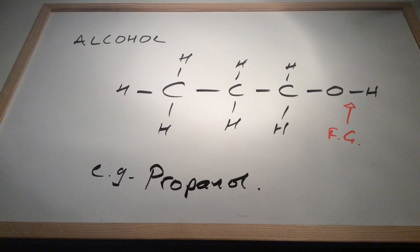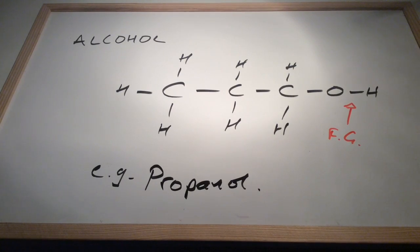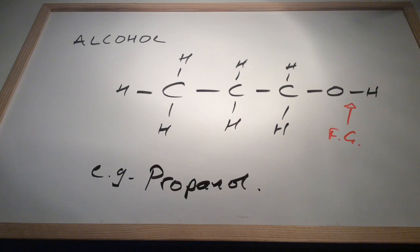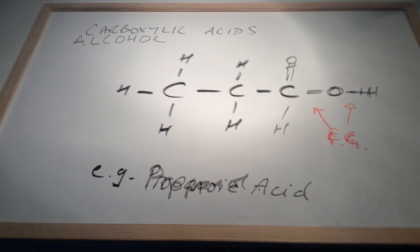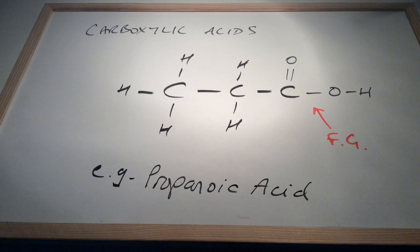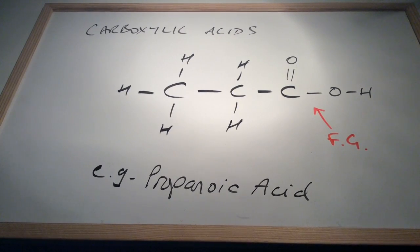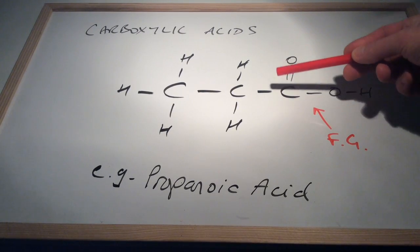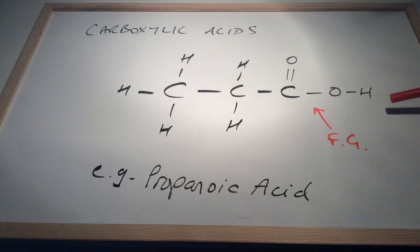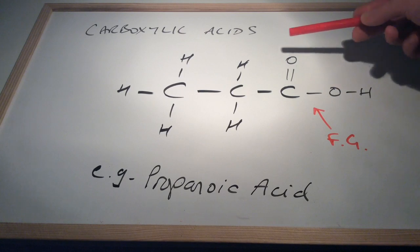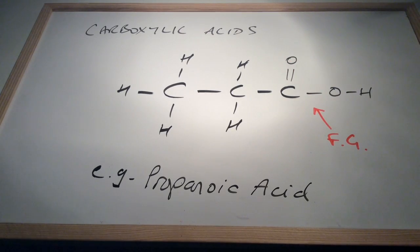For alcohols we've got propanol, and the functional group is the OH group — the hydroxyl group. For carboxylic acids we've got propanoic acid, and the functional group is the carboxyl group — the COOH part.